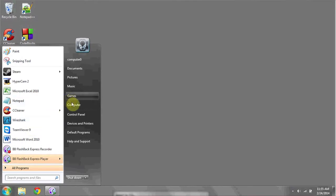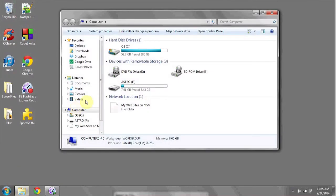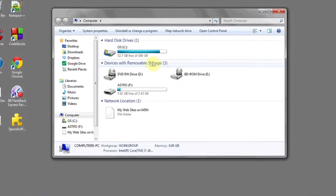you can go to the Start button, go to Computer, and then go to where you see Devices with Removable Storage.